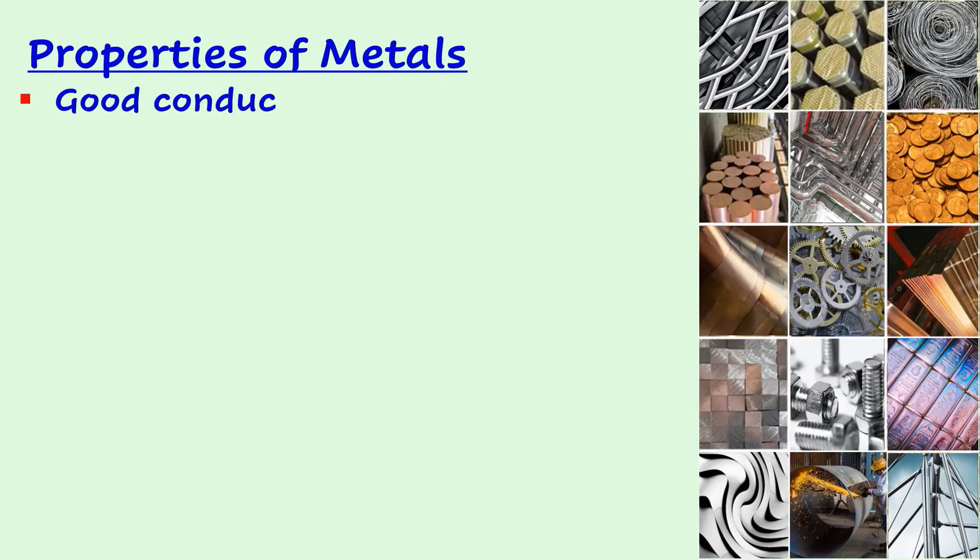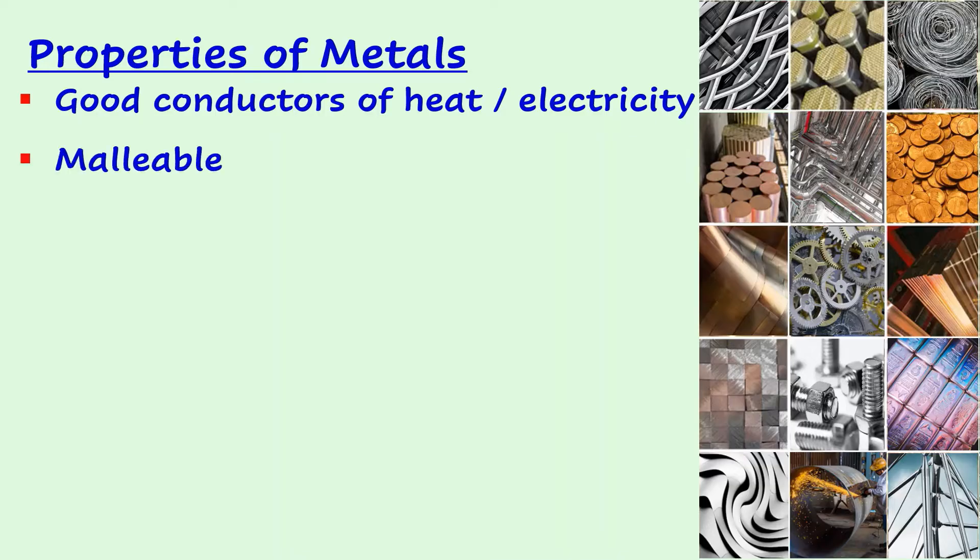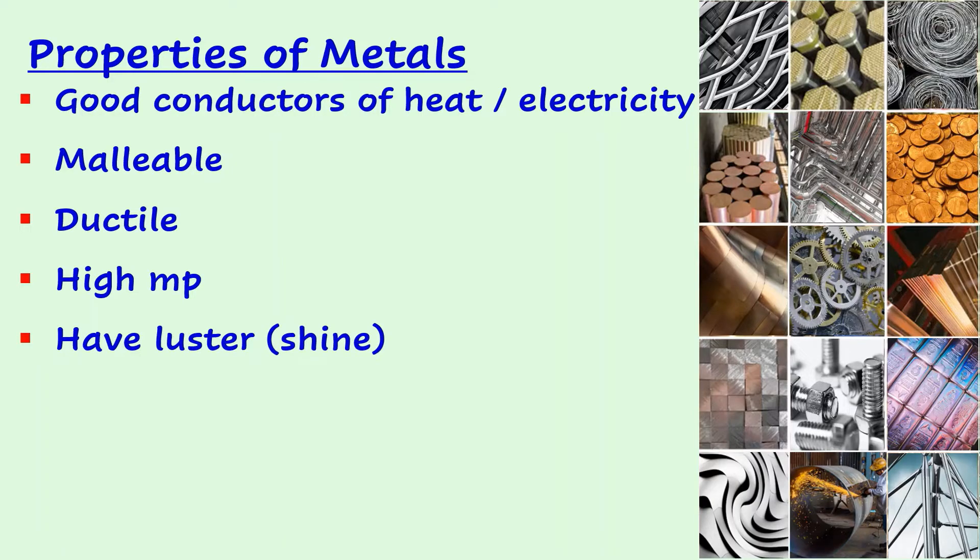All metals tend to be good conductors of heat and electricity. They are malleable, meaning they can be flattened into sheets without crumbling. Metals are ductile or can be drawn into wires. Most metals have high melting points and luster or shine. Metals at the bottom of a group tend to be more reactive than metals toward the top of the same group.